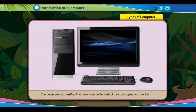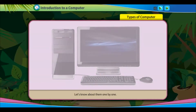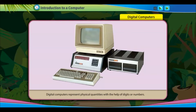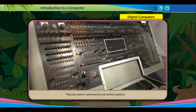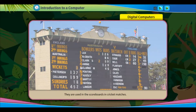Computers are also classified into three types on the basis of their basic operating principle. Digital computers represent physical quantities with the help of digits or numbers. They are used in commercial and control systems, and are also used in scoreboards at cricket matches.